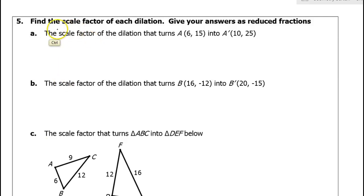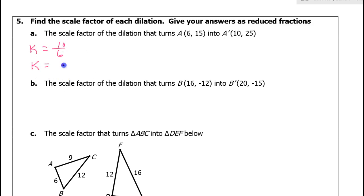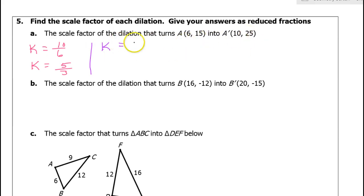For number 5, we're supposed to find the scale factor of each dilation and give answers as reduced fractions. We assume these are dilations from the origin. Scale factor is new over old. Using the x values, that's 10 over 6, which reduces to 5 over 3. Checking with the y values: 25 over 15 also reduces to 5 over 3. So the scale factor is 5 over 3.